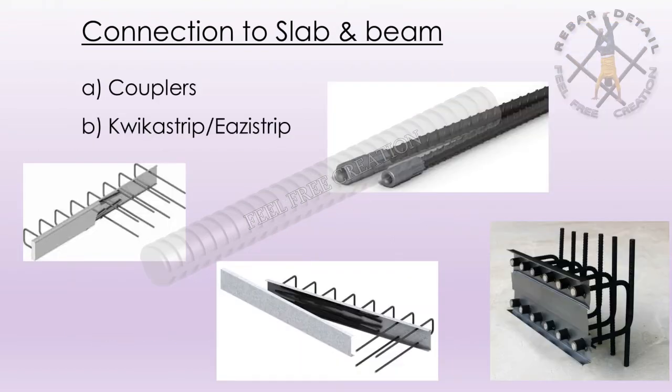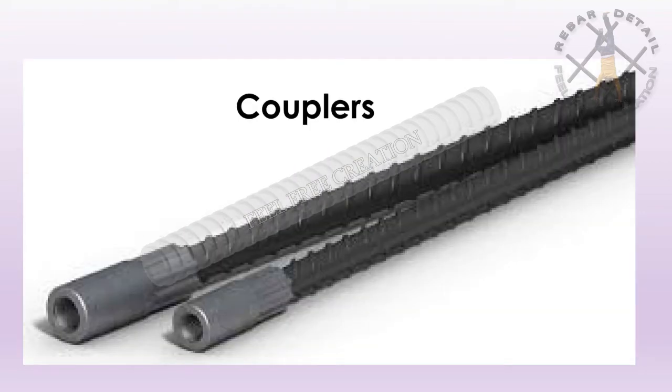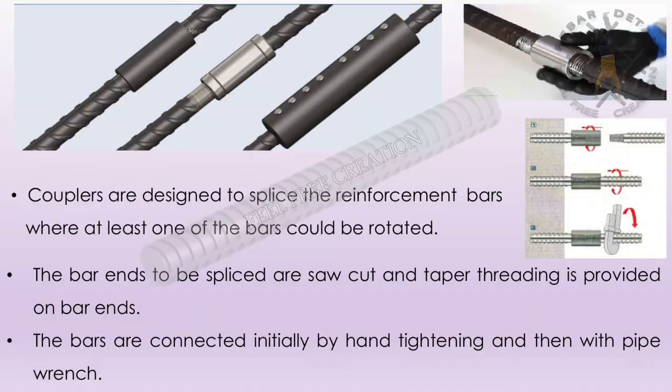For connection to slab and beam, we use couplers, quickestrip, easostrip, or pull-out bars. Regarding couplers: Point 1, couplers are designed to splice the reinforcement bars where at least one of the bars could be rotated. Point 2, the bar ends to be spliced are saw cut and taper threading is provided on bar ends. Point 3, the bars are connected initially by hand tightening and then with a pipe wrench.